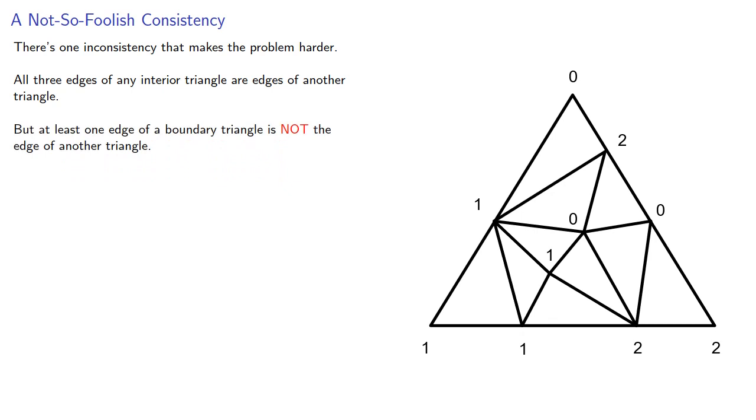But at least one edge of a boundary triangle is not the edge of another triangle. This means that a 01 edge on a boundary triangle is treated differently from a 01 edge on an interior triangle.